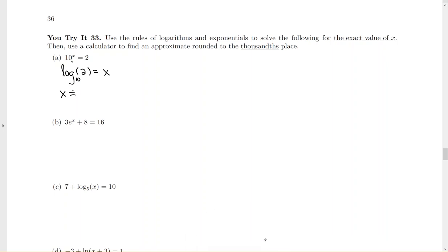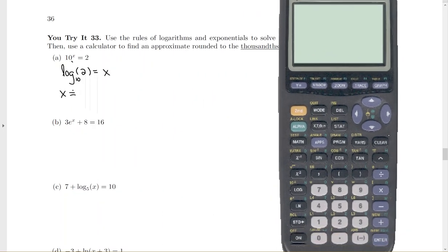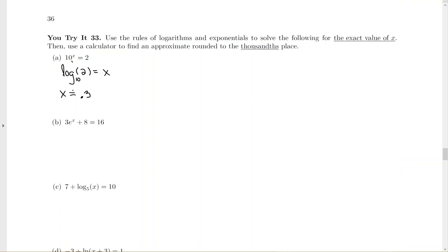Because it's base 10, we can go ahead and use our calculator directly. Just hit the log button. It's automatically base 10, so you just type in the argument and come up with this. Now, they want it to the thousandths place, so that's three decimal places. You have to look at decimal place number four to determine whether you round up, and in this case we don't. So our approximation is .301.